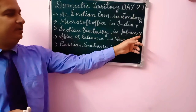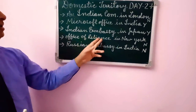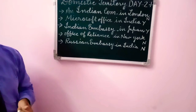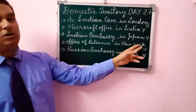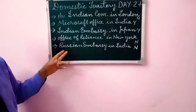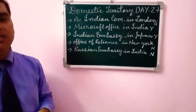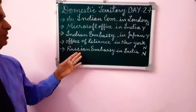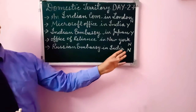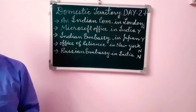Example four: The Office of Reliance in New York. That is why we do not include it in the Domestic Territory of India. Here I wrote some examples. Now we will move to a new concept.